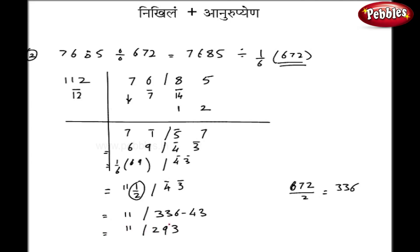Now this 336 will go to right hand side and I will subtract my 43 from that. So as in right hand side, I get 293. And my final answer, my quotient is 11 and remainder is 293.